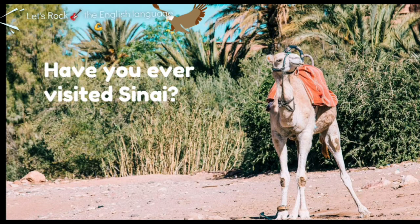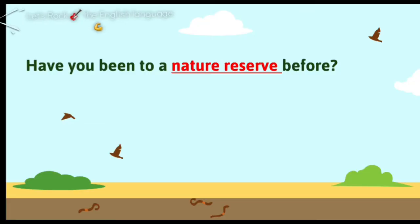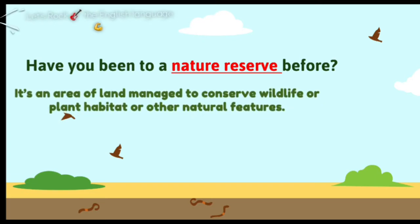Have you ever visited Sinai? In Sinai you can see many nature reserves. What's the meaning of nature reserve? A nature reserve is an area of land managed to conserve wildlife — to keep the animals and plants safe. If you have any endangered animal, the kind of animal that's going to die and we can't find it again, we call it endangered. So if you have any endangered animal, you can put this animal to live in a nature reserve. So the nature reserve is a place to keep the wildlife, plants, and natural features safe.